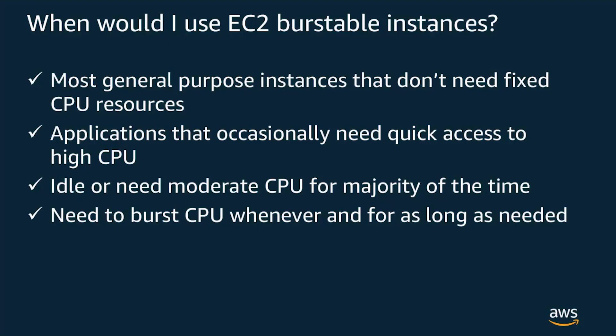Burstable instances are used for most general purpose applications that can benefit from quick access to high levels of CPU whenever needed, but most of the time are using moderate levels of CPU. Additionally, T2 and T3 burstable CPU instances are the only option for nano, micro, and small instance sizes, making them a good choice if you're running a smaller workload that doesn't need the capacity of a larger instance type.